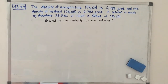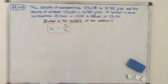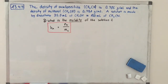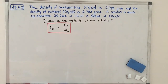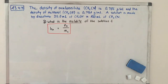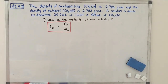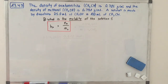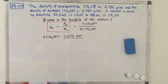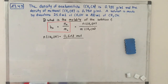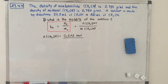The next part is: what is the molality of the solution? Molality indicates how many moles of solute are in 1 kg of solvent — in this case, how many moles of methanol are in 1 kg of acetonitrile. From task A, we already calculated the number of moles of methanol: it was 0.618 mol.